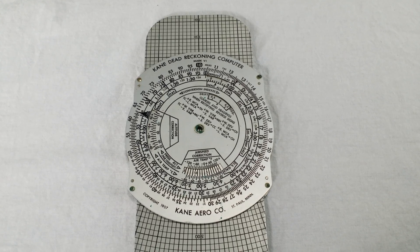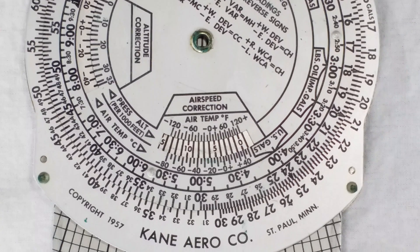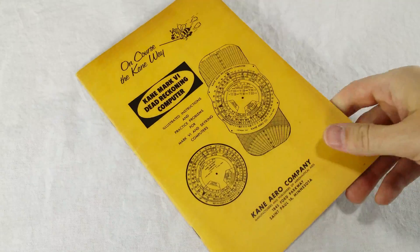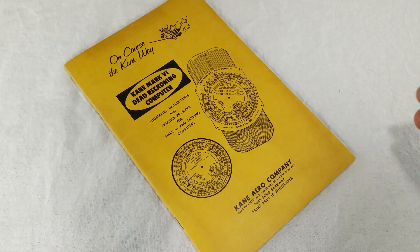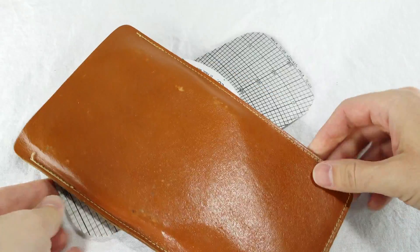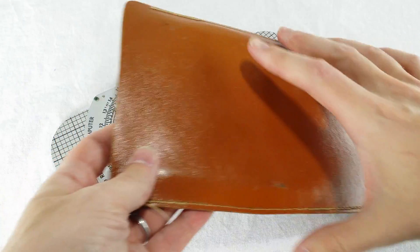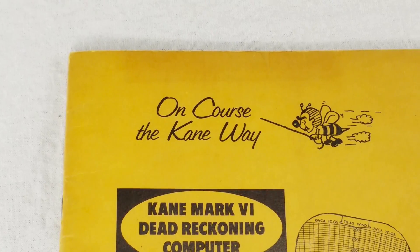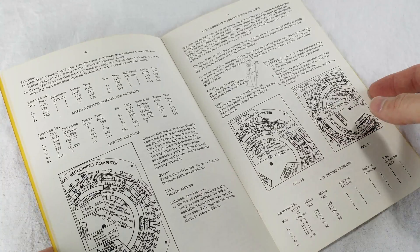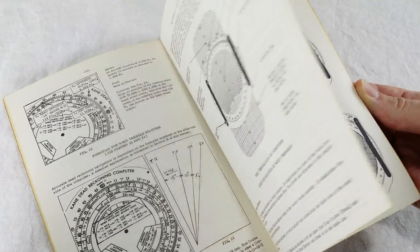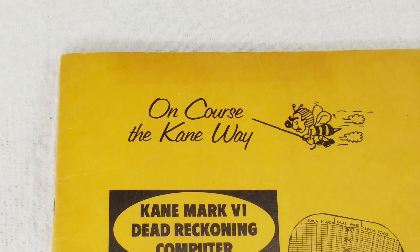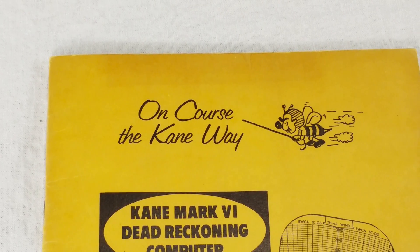This thing was made by the Kane Aero Company in St. Paul, Minnesota. I have the original illustrated instructions and practice problems and the original leather carrying case. I made a scan of the instructions on course the Kane way. It's pretty detailed and the previous owner seems to have really worked on it. And look at that bee! It's carrying a Kane.